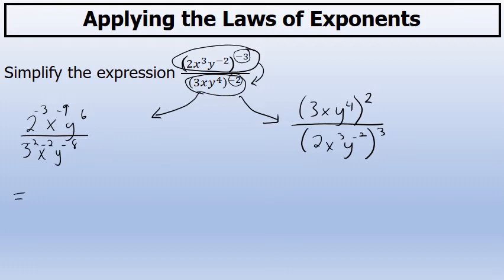Using the first method, everything with a negative exponent I'll now write on the other side of the fraction bar. So 2 to the negative three power I'll rewrite as 2 to the third power in the denominator. X to the negative ninth will be rewritten as x to the positive ninth in the denominator. And the factor of y to the sixth will stay in the numerator.